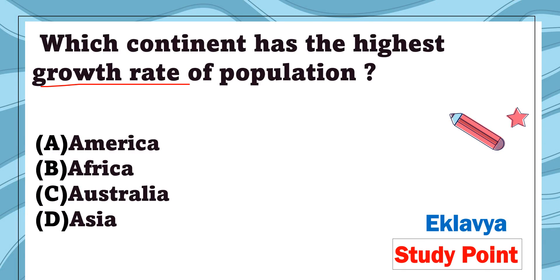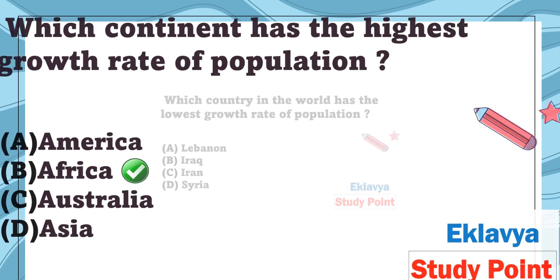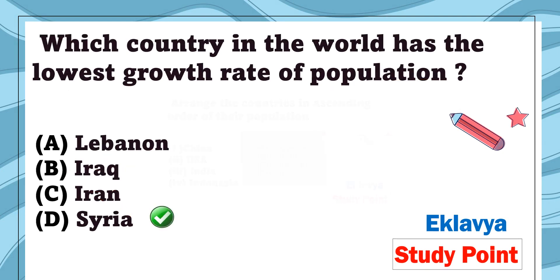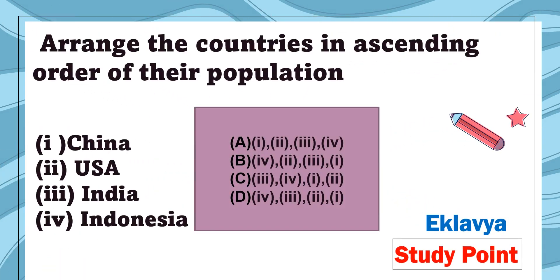Question 16: Which continent has the highest growth rate of population — America, Africa, Australia, or Asia? The correct answer is Africa, as it is the continent with the highest population growth rate. Question 17: Which country in the world has the lowest growth rate of population — Lebanon, Iraq, Iran, or Syria? The correct answer is Syria.